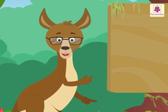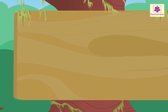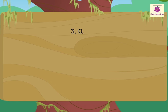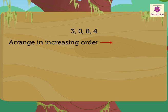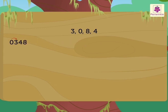Now, let us solve one more example to understand it in a better way. Look at the digits 3, 0, 8, 4. Now, here to form the smallest number, we arrange it as 0, 3, 4, 8. But this number is a 3-digit number. Therefore, we interchange the positions of the first two digits.